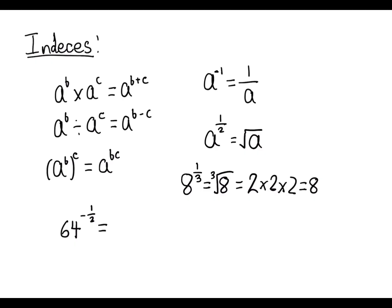So for this, we just do it one stage at a time. The minus, to get rid of it, we do one over that power. So we have one over 64 to the half. And anything to the power of a half, remember, is just take the square root. So it's one over square root of 64, which is just one over eight.